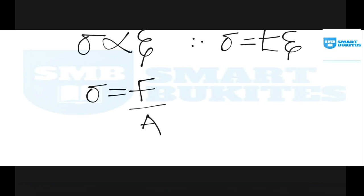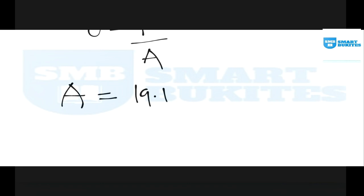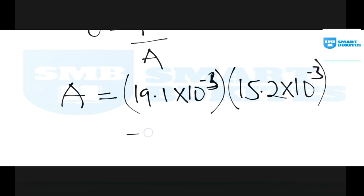We have the force but we don't have the area which we can easily find. We are told that it's a rectangle and the area of a rectangle is length times breadth, which is 19.1 millimeters. Let's change it to meters: times 10 to the power of negative 3, multiplied by 15.2, also to meters, times 10 to the power of minus 3. Calculating this correctly in your calculator, you'll see that the area will give you 2.9032 times 10 to the power of minus 4 meters squared.